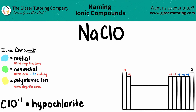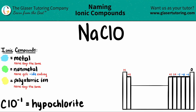Today we are going to be finding out the name for the ionic compound NaClO. Whenever you see three or more elements in your ionic compound, you know that you have at least one polyatomic ion. So I need to figure out what is the polyatomic ion in NaClO.